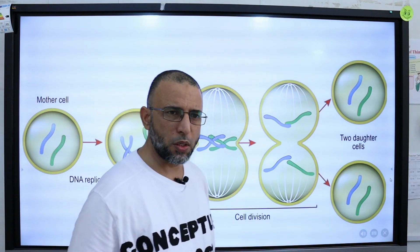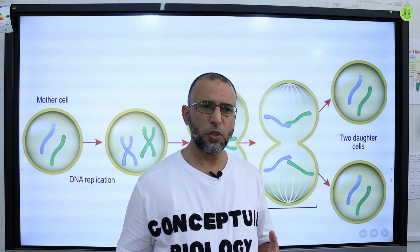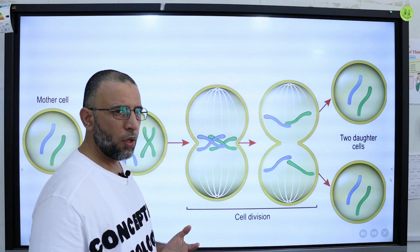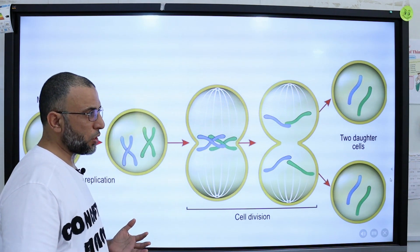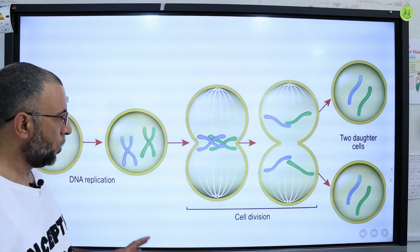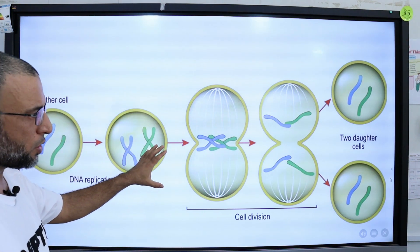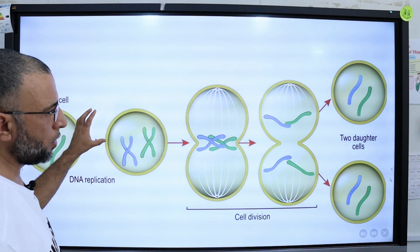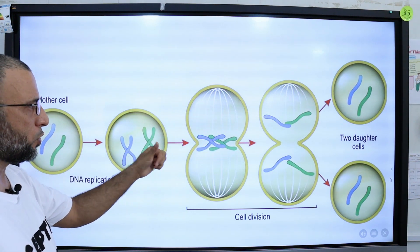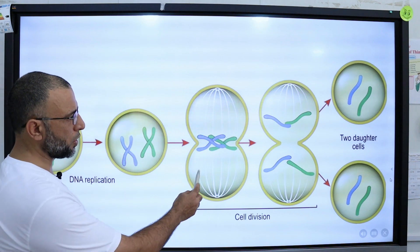Mitosis is a nuclear division that produces 2 genetically identical daughter nuclei, each containing the same number of chromosomes as the parent nucleus. This is a cell that undergoes mitosis and produces 2 daughter cells, and in each daughter cell the number of chromosomes is the same as in the parent cell.